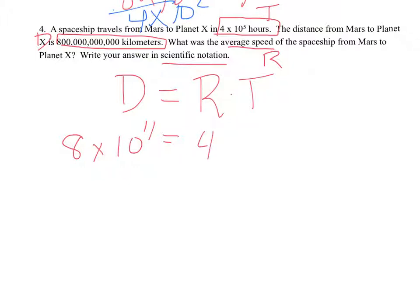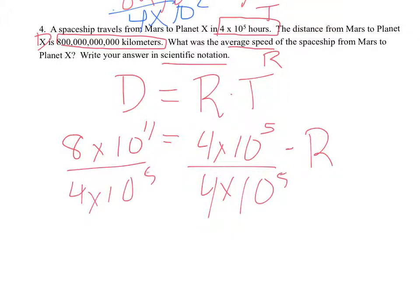Our time is 4 times 10 to the 5th. What we're looking for is rate. Same approach - we'll divide both sides by 4 times 10 to the 5th.